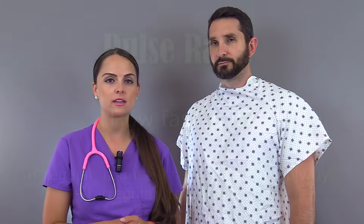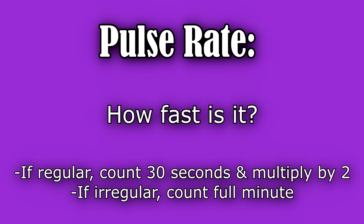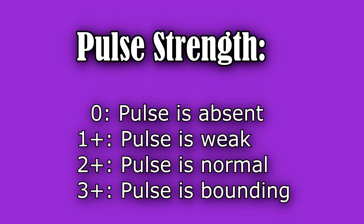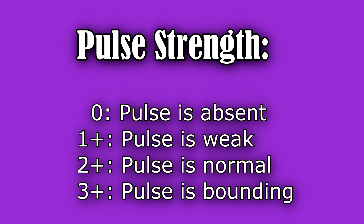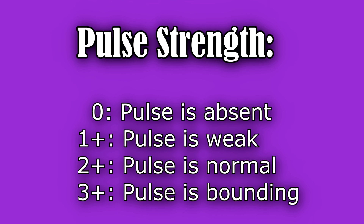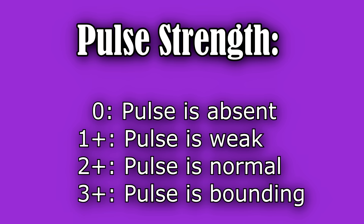Now the ones that you're not using routinely, it's still really important to know where they are located. And whenever you're assessing the pulse, you will be looking at a few things. One thing will be the rate — how fast is it — along with the strength, and you'll be grading it on a scale of zero to three: zero being absent, one plus it's weak, two plus it's normal, and three plus it's bounding.